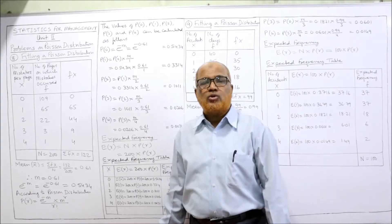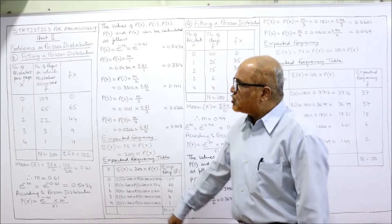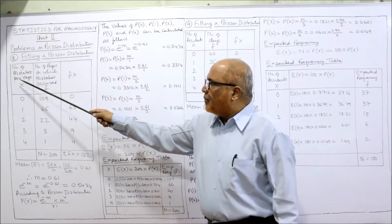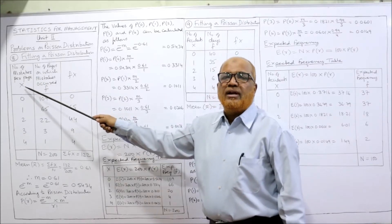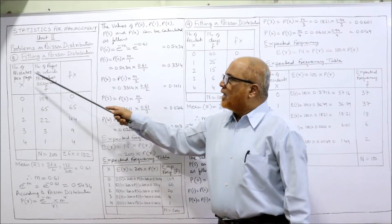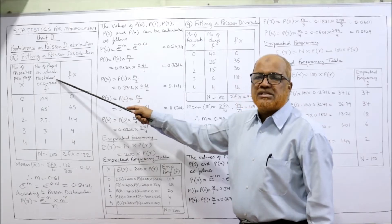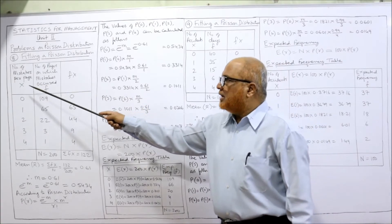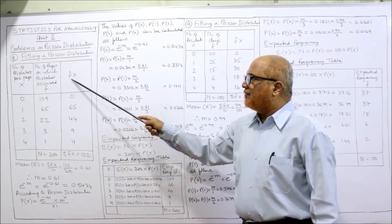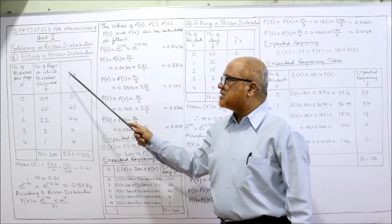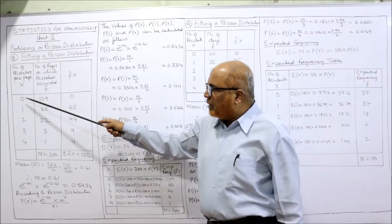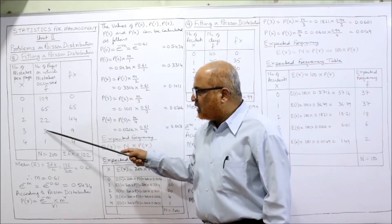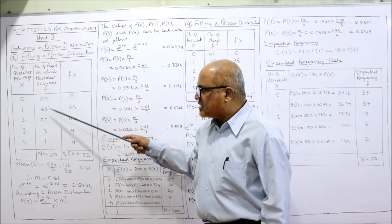First, set up the table. The first column is number of mistakes per page, denoted X. The second column is number of pages on which mistakes occurred, denoted F. Then we add a column FX — that is F multiplied by X. The X values are 0, 1, 2, 3, 4, and the actual frequencies F are 109, 65, 22, 3, 1.